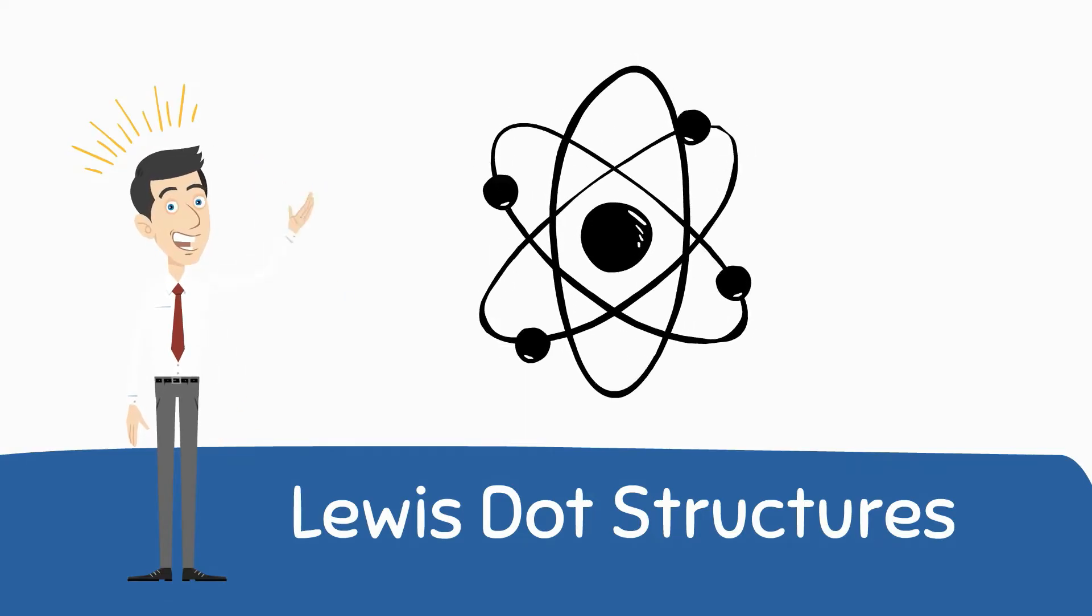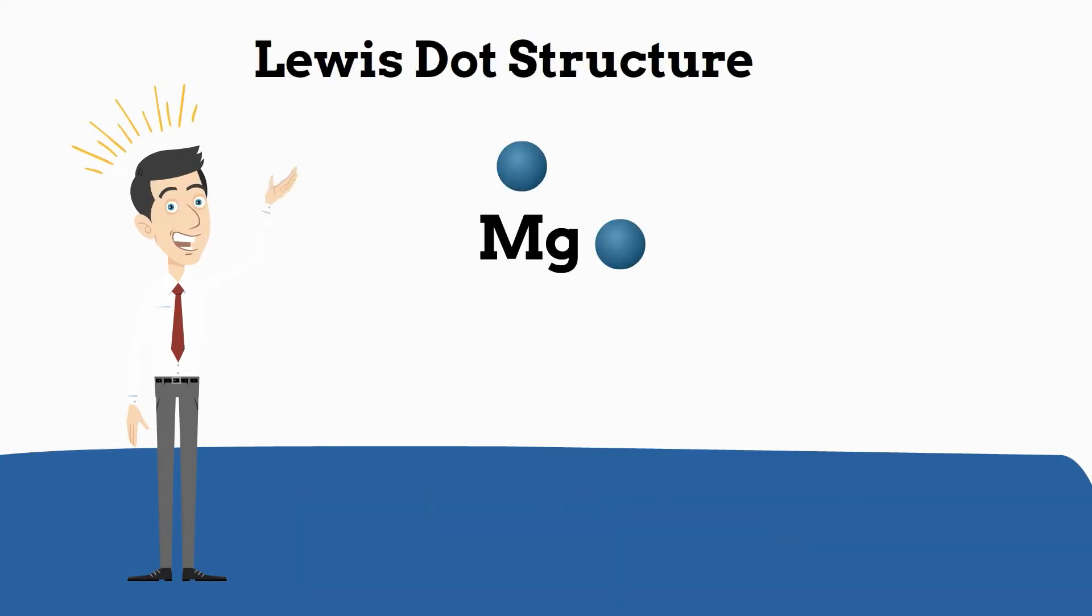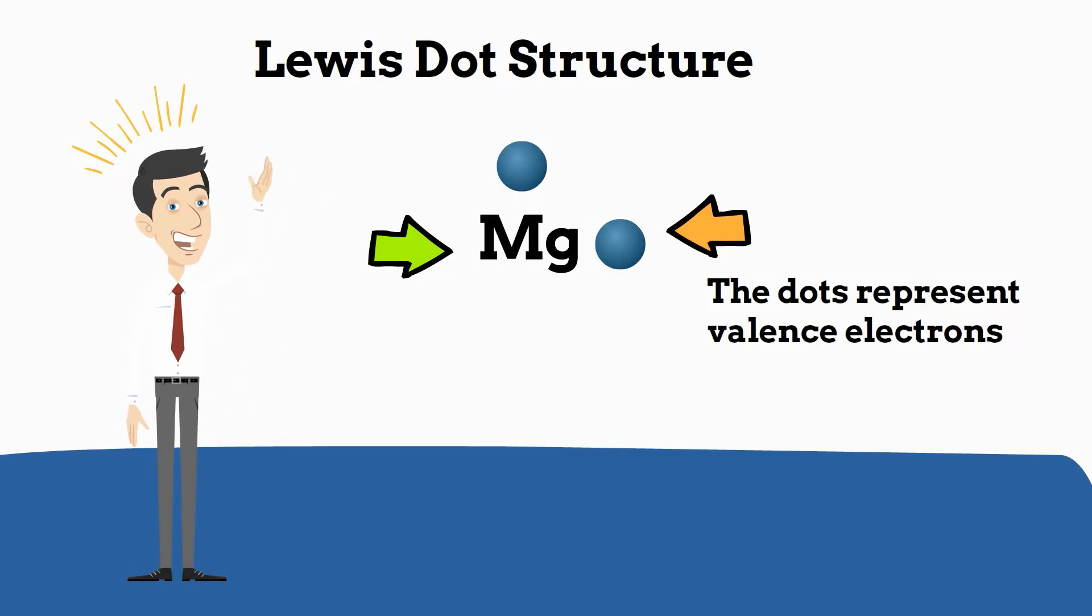Lewis dot structures are a way to show the valence electrons of elements. If you look at a Lewis dot structure, you will notice that there is a chemical symbol and dots that go around the chemical symbol. These dots represent the electrons found in the outer shell, which are called valence electrons.